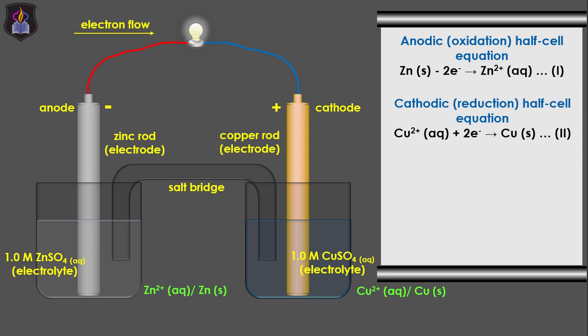Don't forget that electrons always flow from the anode to the cathode. If we combine the two half cell reactions and net out the number of moles of electrons transferred, we obtain the overall cell reaction, which means that zinc metal undergoes oxidation to form zinc ions while copper(II) ions undergo reduction to form metallic copper. So zinc is a reducing agent because it is oxidized, while copper(II) ion is the oxidizing agent because it is reduced.